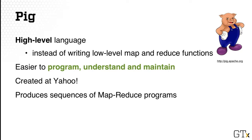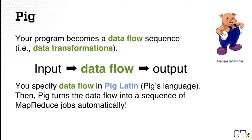PIG's language is called PIG Latin. When using PIG, your program becomes a data flow sequence. You can think of it as multiple data transformations, meaning you have your input data, then some operation is done on that input data to generate some intermediate data. And PIG performs several such intermediate operations on the intermediate data, eventually producing the results that you want.